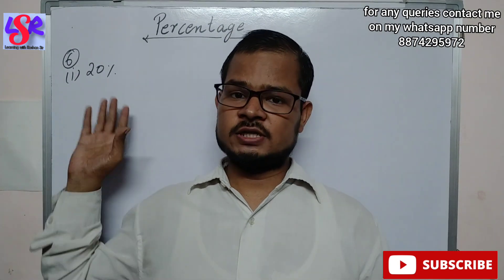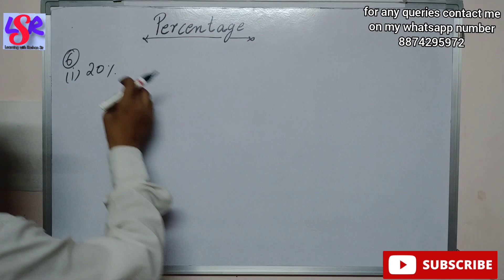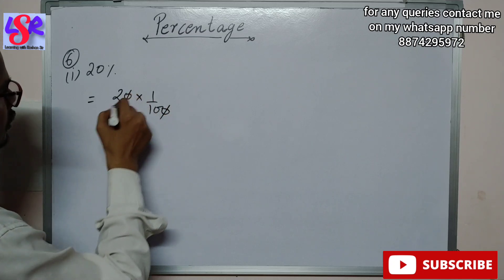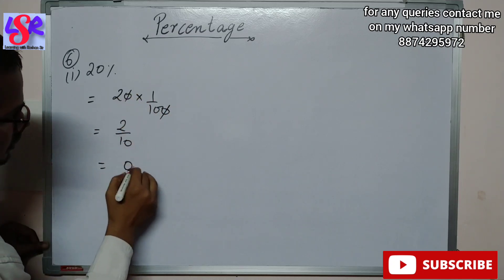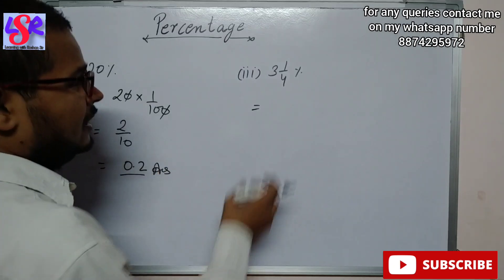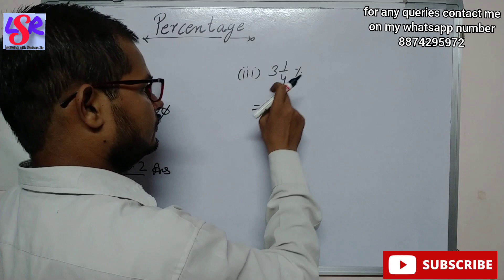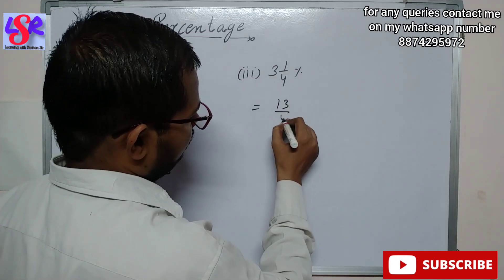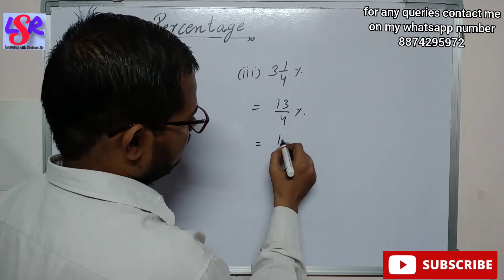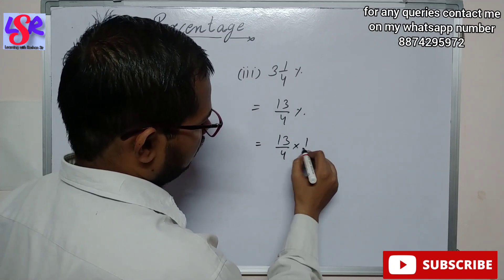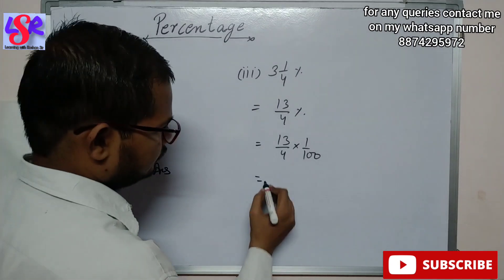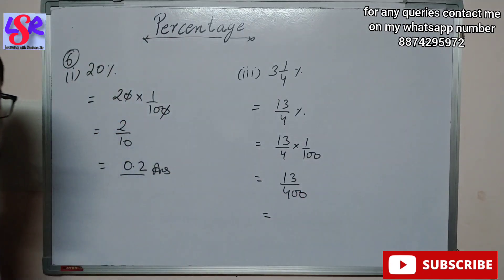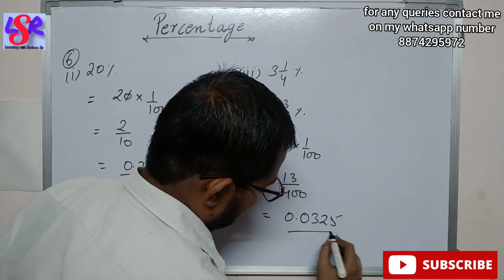Now in Question 6, we have to convert a percentage into decimal by removing the percentage sign. So 20% can be written as 20 into 1 upon 100, which gives 2 upon 10, that is 0.2 as the answer. Let's also do 3 whole 1/4 percent. First, converting to improper form: 4 into 3 is 12, plus 1 is 13, giving 13 upon 4 percent. Removing the percent: 13 upon 4 into 1 upon 100 equals 13 upon 400, which gives 0.0325 as the answer.